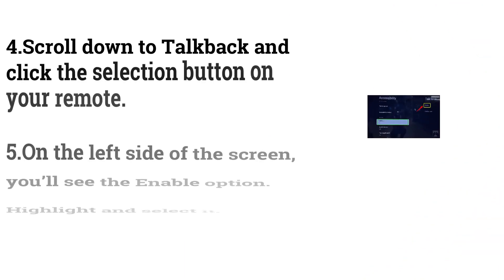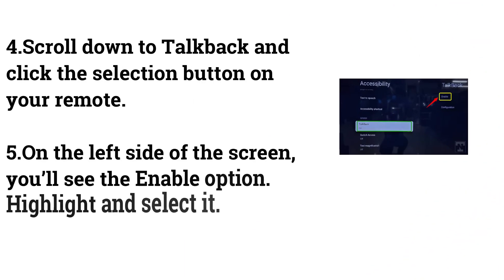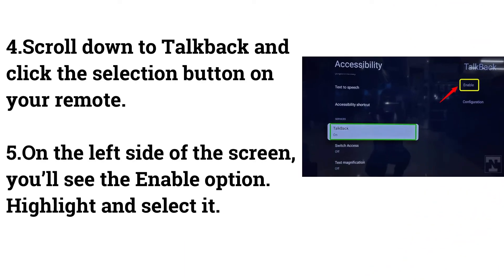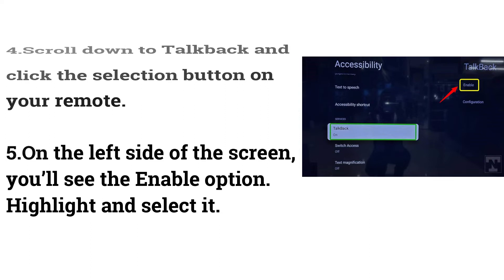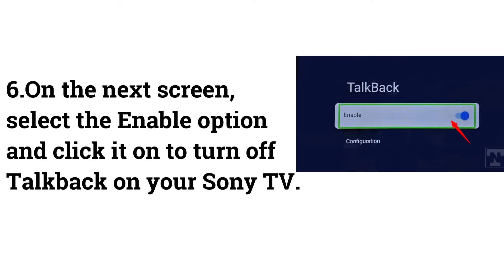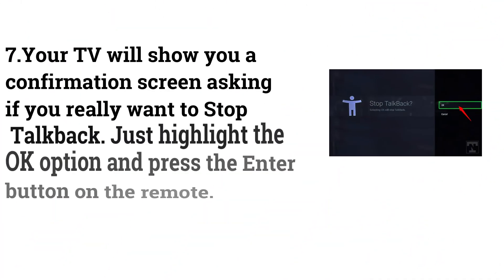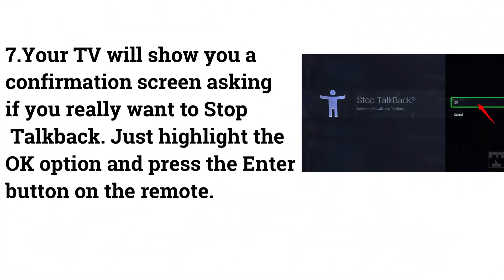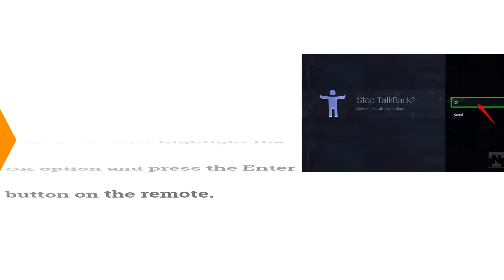Scroll down to TalkBack and click the Selection button on your remote. On the left side of the screen, you'll see the Enable option. Highlight and select it. On the next screen, select the Enable option and click it to turn off TalkBack on your Sony TV. Your TV will show a confirmation screen asking if you really want to stop TalkBack. Highlight the OK option and press the Enter button on the remote.